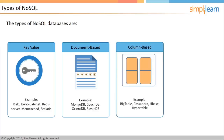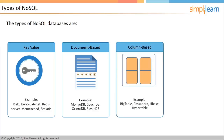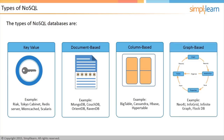Three: Column-Based Databases — each storage block contains data from only one column. Examples are Bigtable, Cassandra, HBase, and Hypertable. Four: Graph-Based Databases — a network database that uses nodes to represent and store data. Examples are Neo4j, InfoGrid, Infinite Graph, and FlockDB.